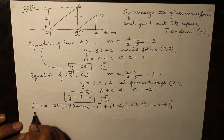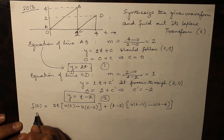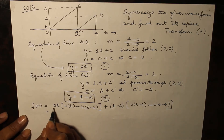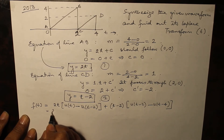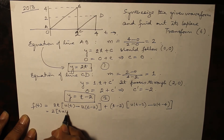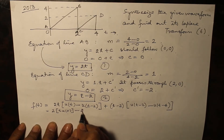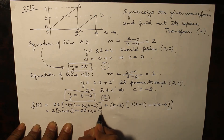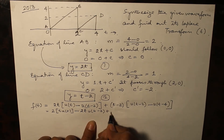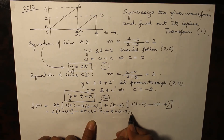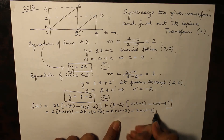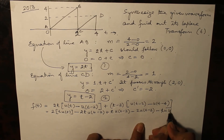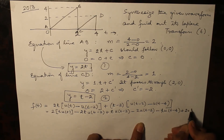Before taking the Laplace transform, one step is necessary: we have to convert it into step and ramp form. This is a slightly difficult problem because you have to arrange the terms. Expanding: 2t·u(t) minus 2t·u(t minus 2) plus t·u(t minus 2) minus 2·u(t minus 2) minus t·u(t minus 4) plus 2·u(t minus 4).